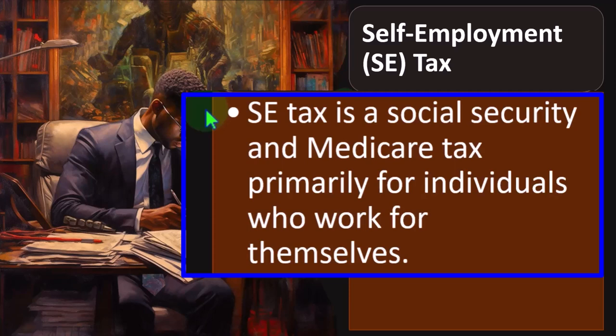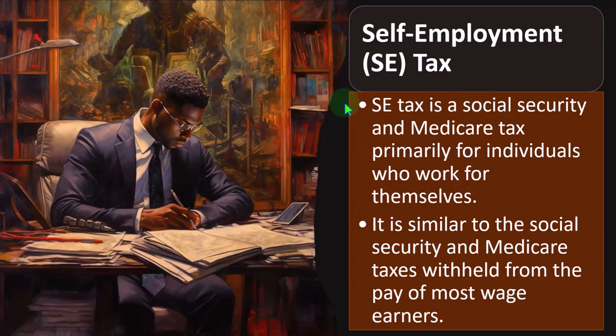Self-employment tax is a Social Security and Medicare tax primarily for individuals who work for themselves — those that report on a Schedule C, for example. There are also complications for other types of business entities such as S-Corporations, Partnerships, and LLCs regarding how Social Security and Medicare will be reported. Here we focus mainly on Schedule C.